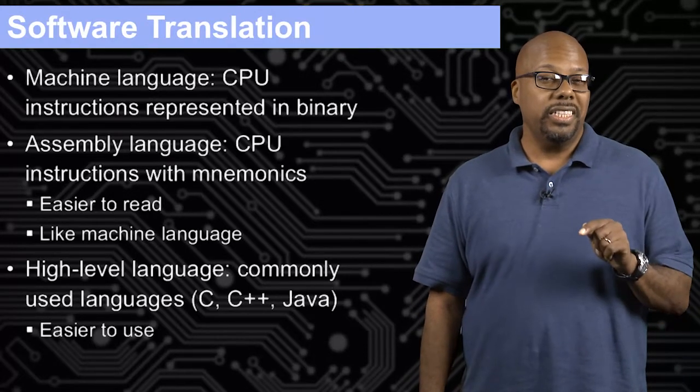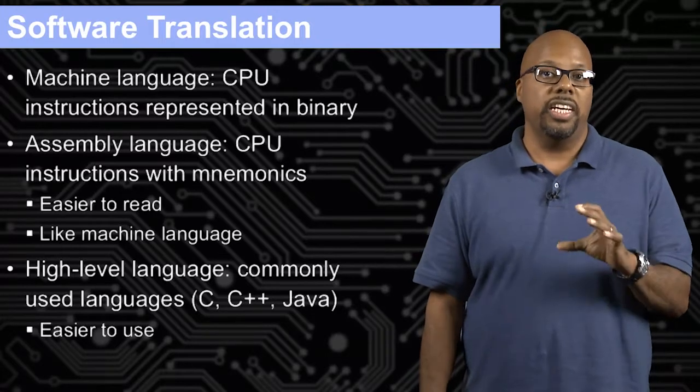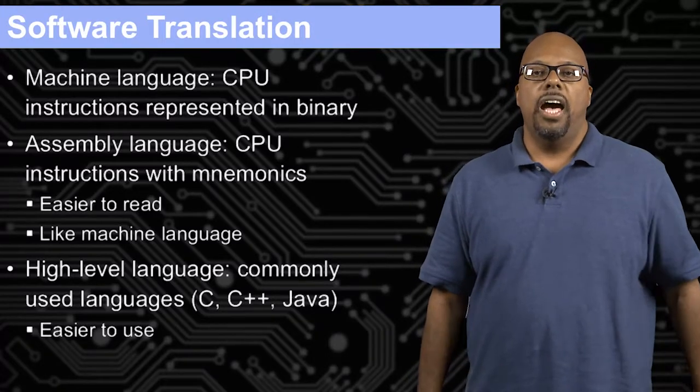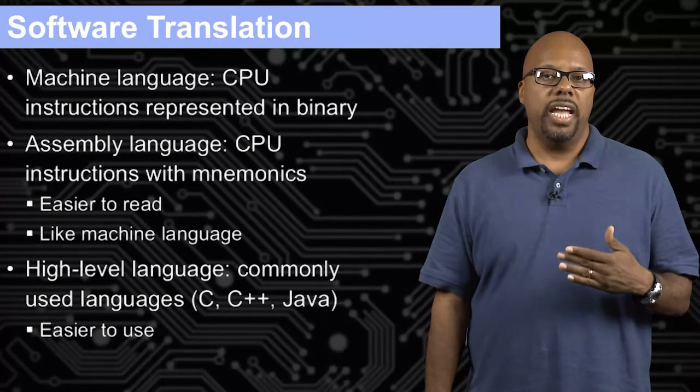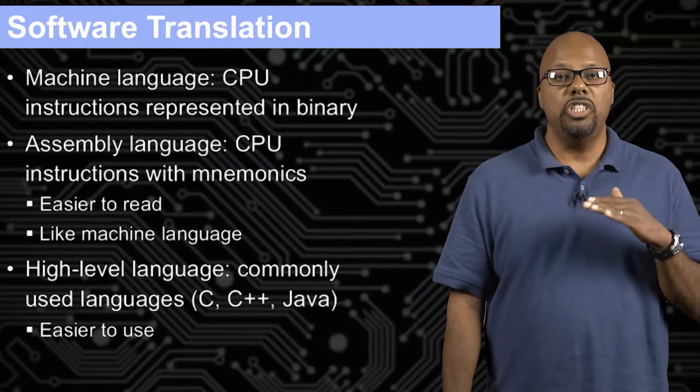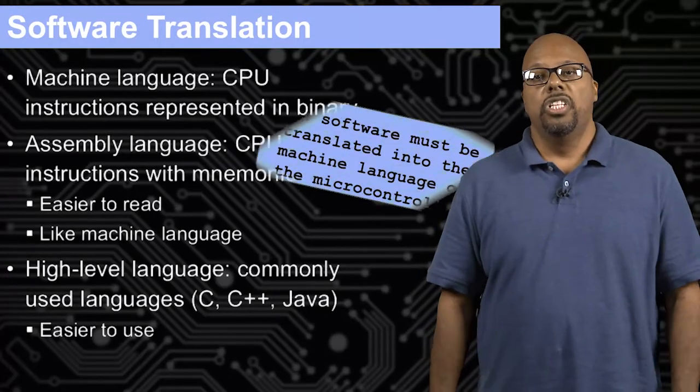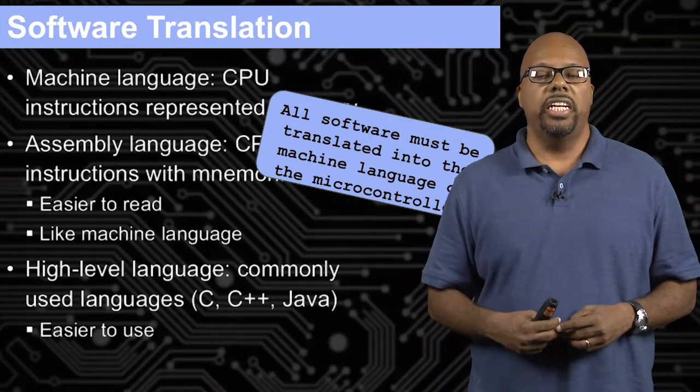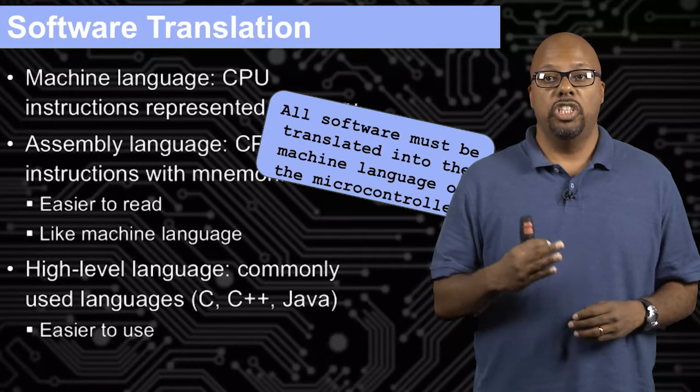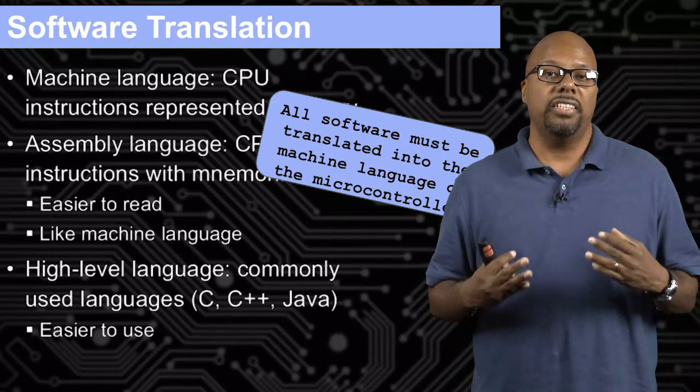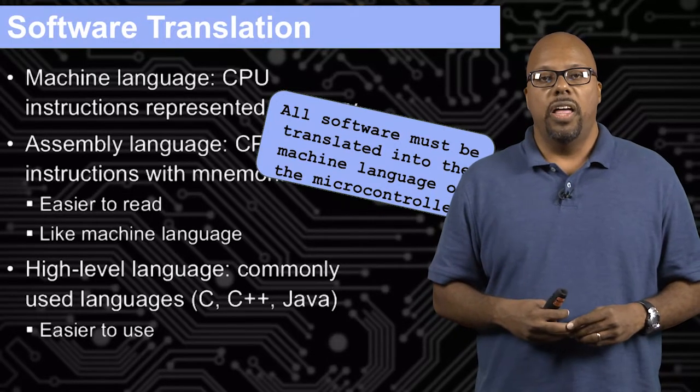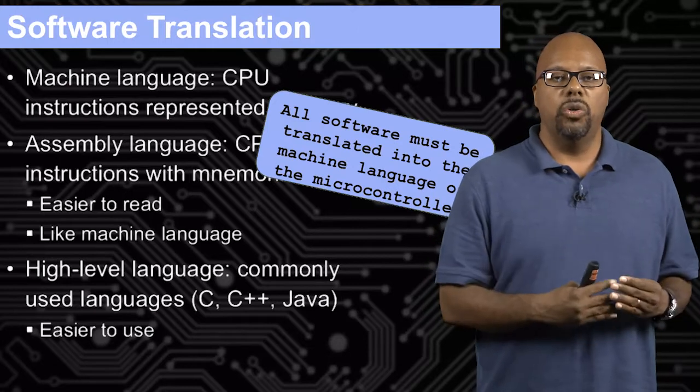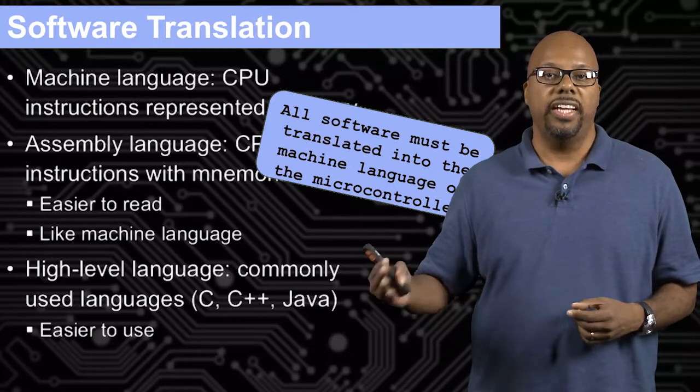Those languages, high-level languages, are what we're actually going to code in. But that's not what's actually executed. The machine language is what's actually executed. This high-level code, high-level language that you write in, it has to be converted into machine language before execution. All the software that you write in a high-level language has to be translated into machine language, into the machine language of the microcontroller before you can actually execute it. There's always that process. You're going to write the code, then you're going to do the translation, and then it gets executed.